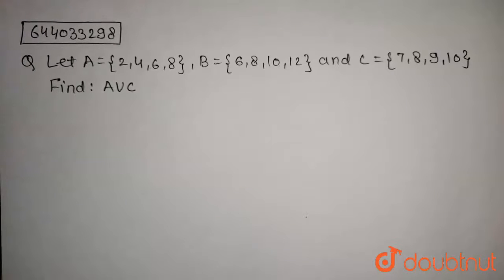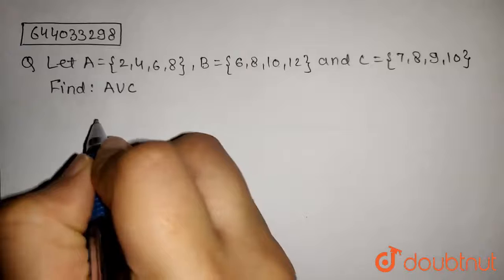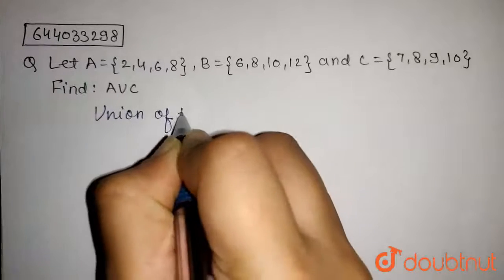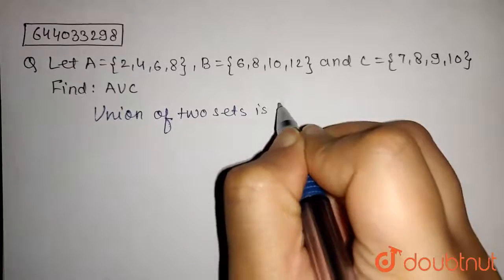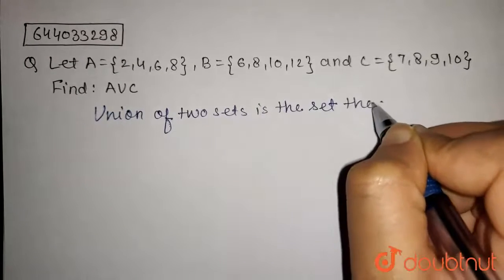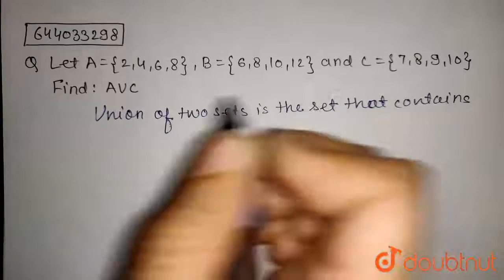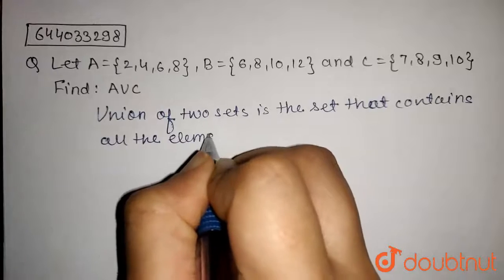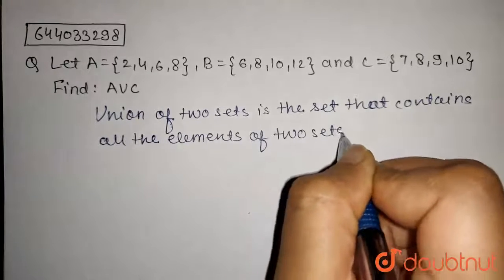So in this question we have to find A union C. Firstly, what is a union? So union of two sets, or two or more sets, is the set that contains all the elements of the two sets.